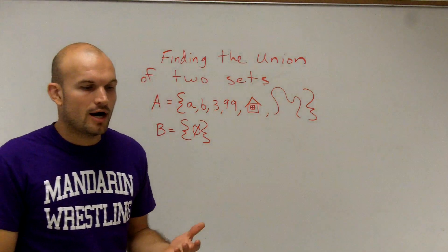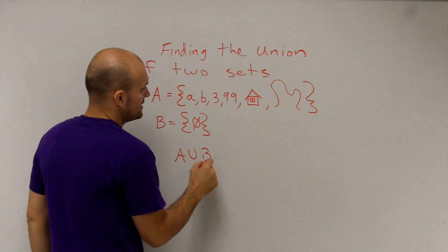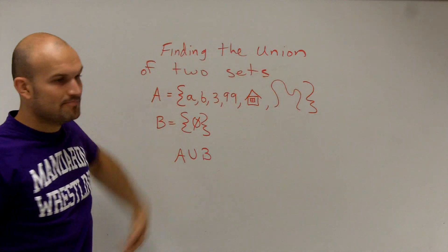the union states, the union of these two sets, A union B, means what are all the elements that's in A or that's in B?